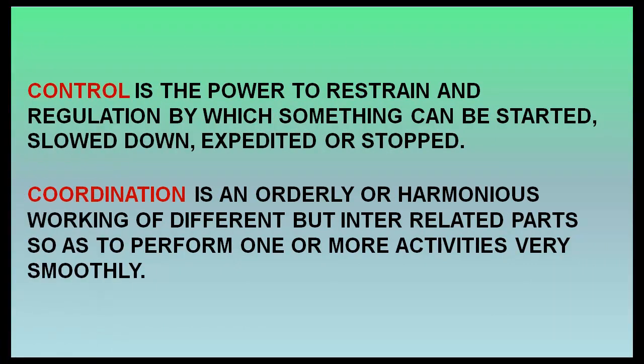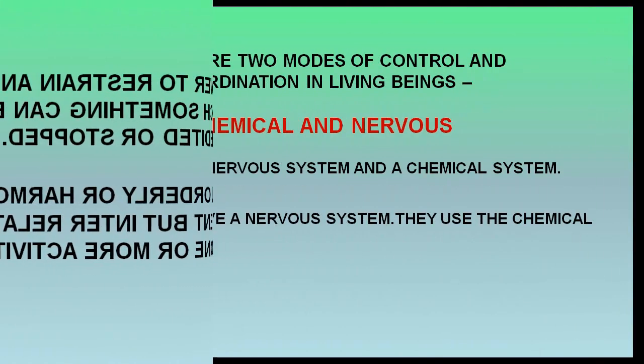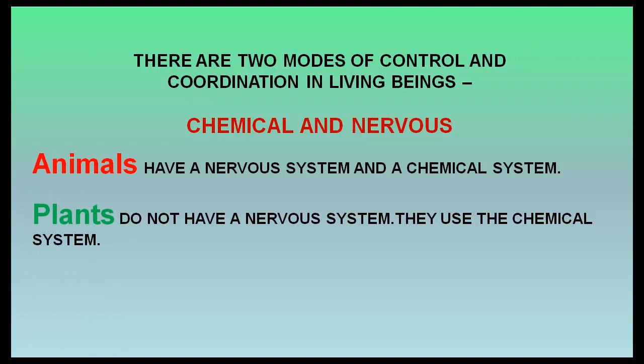Control is the power to restrain and regulate by which something can be started, slowed down, expedited, or stopped. Coordination is an orderly or harmonious working of different but interrelated parts so as to perform one or more activities very smoothly. There are two modes of control and coordination in living beings: chemical and nervous.